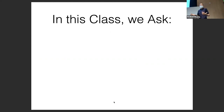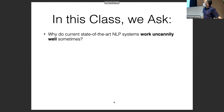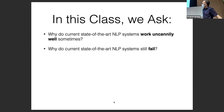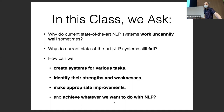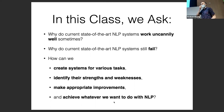So in this class, what we want to ask is: why do current state-of-the-art NLP systems work uncannily well sometimes — why can we deliver a near-perfect translation of novel Japanese news? And why do they still fail on things that seem like they should be relatively easy? How can we create systems for various tasks, identify their strengths and weaknesses, make appropriate improvements, and achieve whatever we want to do with NLP? This class is focused on people who are interested in research or research engineering in NLP. One of the focuses, especially near the end, is how can we come up with novel methods that solve problems and allow us to do interesting new things that haven't been done before.